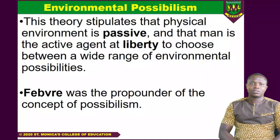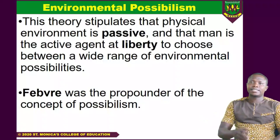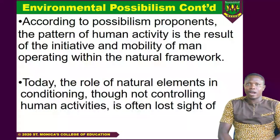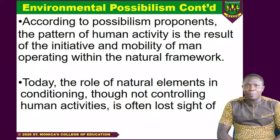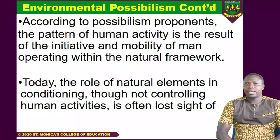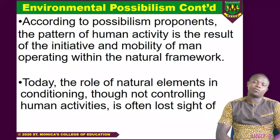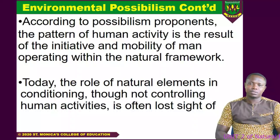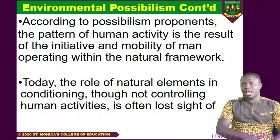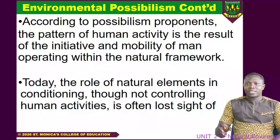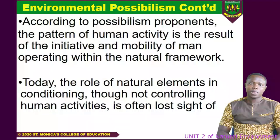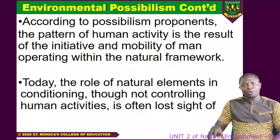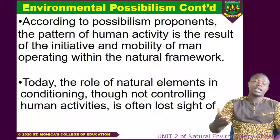Proponents such as Vidal de la Blache are well known in the realm of environmental possibilism. According to the possibilism proponents, the pattern of human activity is the result of the initiative and mobility of man operating within the natural framework. Today, the role of the natural environment in conditioning, though not controlling, human activities is often lost sight of. For example, today's environmental possibilists — you can bulldoze a place and build. We see places where initially it was a water zone or river channel, but human beings are able to fill the place and build, even pushing the sea to build houses in it.